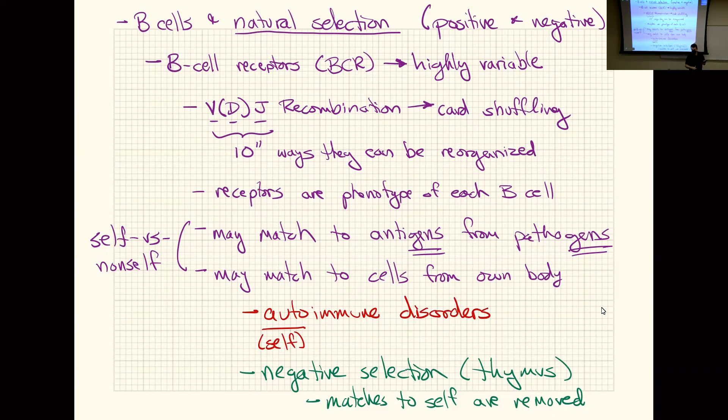So matches to self cells are removed. That's called negative selection. Another name for negative selection that you'll hear is central tolerance. There's a background of random B cells, and only a small set of them that match self are excluded. The rest go on as a group after negative selection.